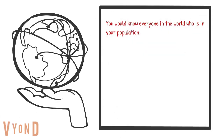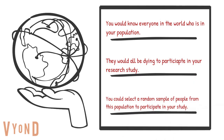In an ideal world, the researcher would know everyone in the population being studied, everyone would be eager to participate, and you could pick people randomly from the population — which is called random sampling. Random sampling is the gold standard and eliminates sampling bias. However, in reality, you don't know everyone in the population, and people are usually not excited to give their time to research studies. So as a researcher, you do your best by finding people in the community and offering incentives, which can lead to a degree of sampling bias.